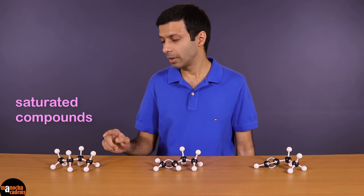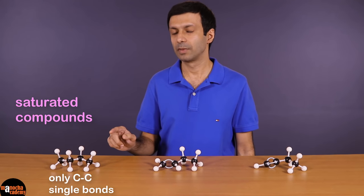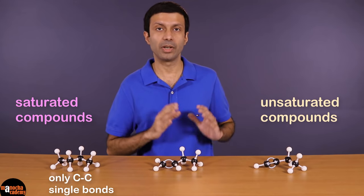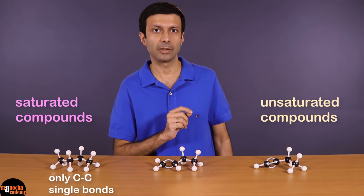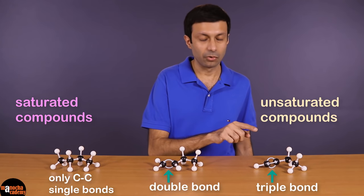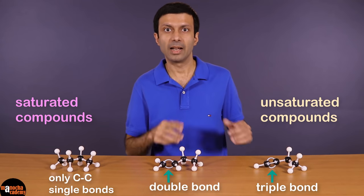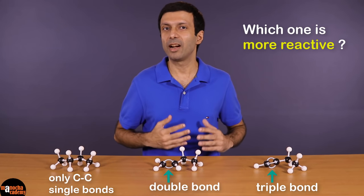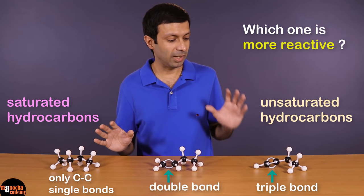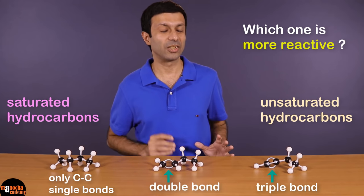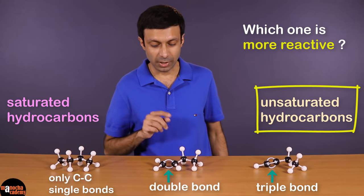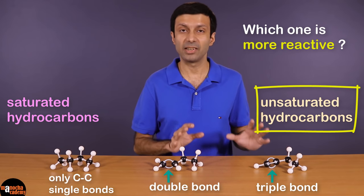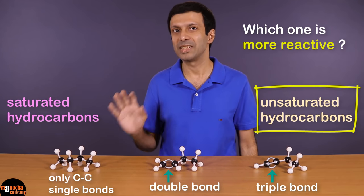A saturated compound contains only carbon-carbon single bonds — all bonds are fully used up, so we say it's saturated. Unsaturated compounds are those in which at least two carbon atoms are connected by a double bond or a triple bond. These bonds can be broken and something can be added, so we say these compounds are unsaturated. The unsaturated hydrocarbons are more reactive than saturated hydrocarbons, because the double and triple bonds can be broken relatively easily.